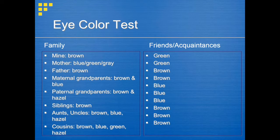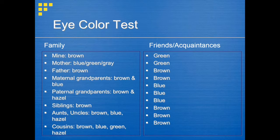We'll start with an activity. Write down your eye color. Now write down the color of your parents', siblings', aunts', uncles', cousins', and grandparents' eyes. Think of 10 people you know that aren't related to you and write down their eye color in a separate column.